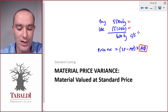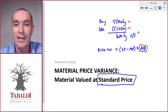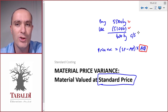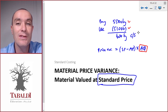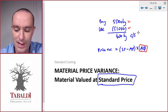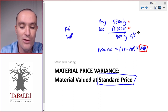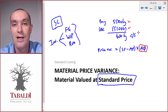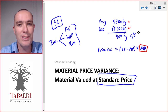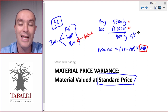We could either value our raw material at standard price — that's what we'll do first — or we can value the raw material at actual price. When we use a standard costing system, our inventory is usually valued at standard cost. That means our finished goods inventory, work-in-process inventory, and also our raw material inventory. But some questions specifically tell us that raw materials are valued at actual price, and that causes the problem.